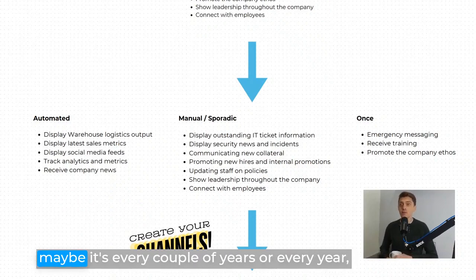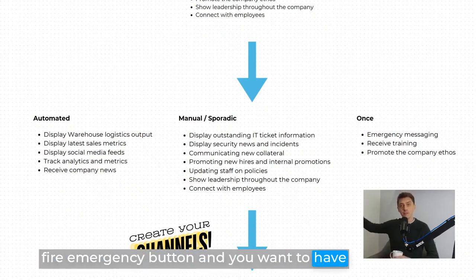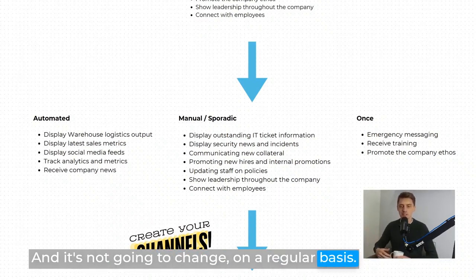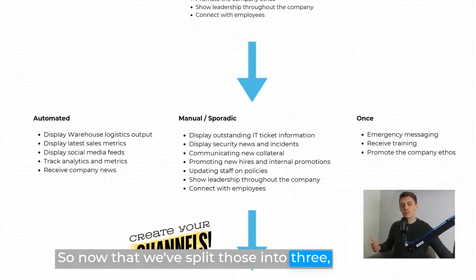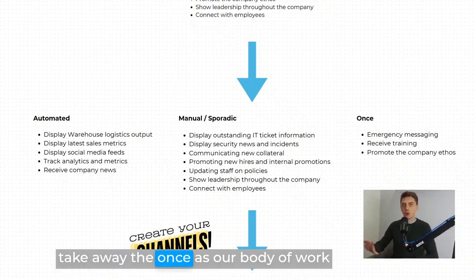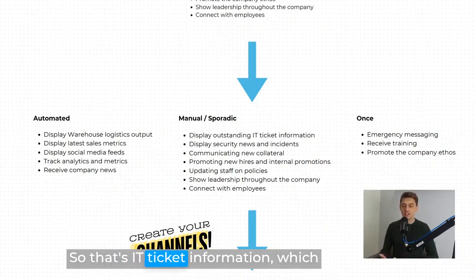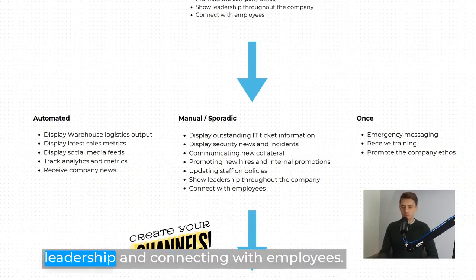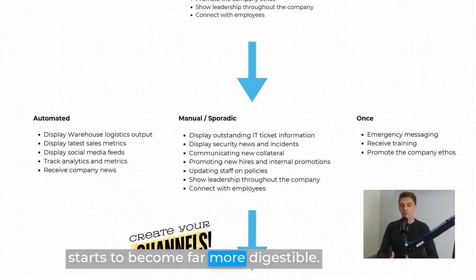For example, training might only change every year or two. Or a fire emergency sign pointing to the nearest exit — that's content that's typically going to change just once. Now that we've split into three types, if we take away the automated and the once as our body of work for initial configuration, we're actually just left with the manual and sporadic. So that's IT ticket information, security news, communicating new collateral, promoting new hires and internal promotions, updating staff on policies, leadership, and connecting with employees. This body of work starts to become far more digestible.